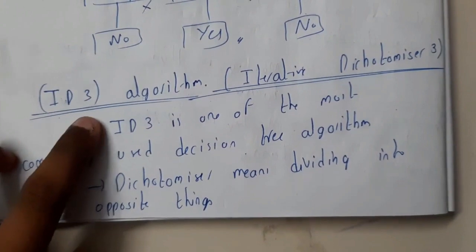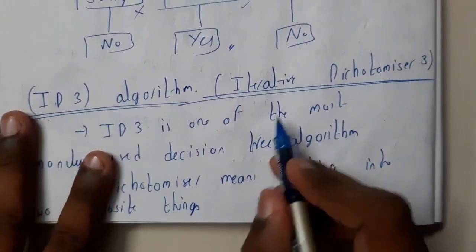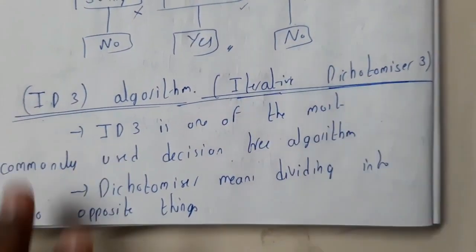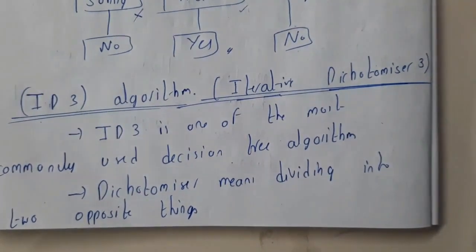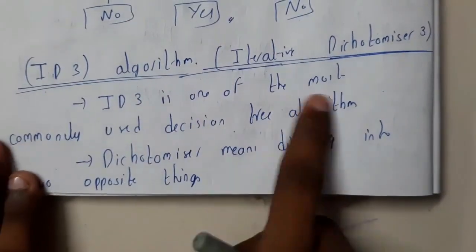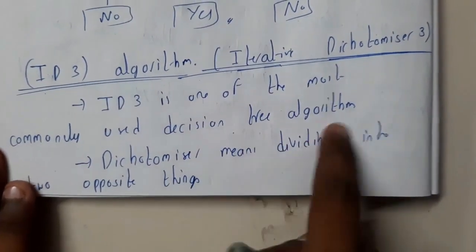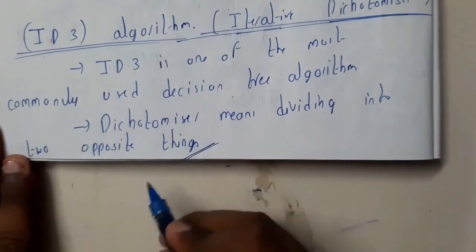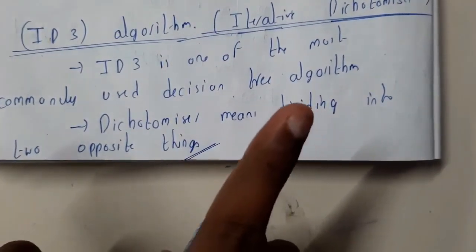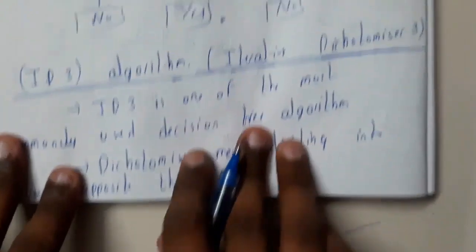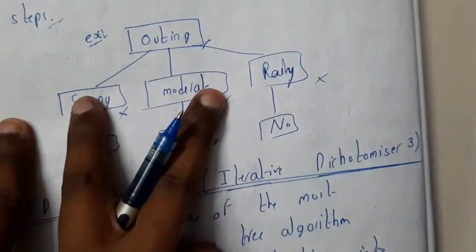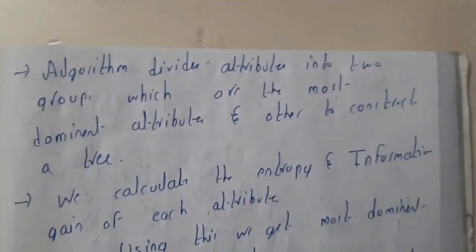The most popular algorithm for decision trees is the ID3 algorithm — that stands for Iterative Dichotomizer 3. ID3 is one of the most commonly used decision tree algorithms. Dichotomizer means dividing into two options, like yes or no. In ID3, you are dividing into essentially two options at each step.